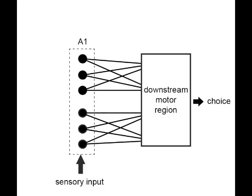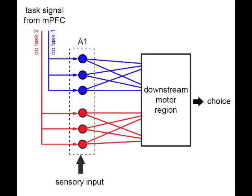All of the neurons have random tuning for the sounds, but we train the output projections of half of them to respond to noise bursts, and the other half to respond to tones. Our data suggests that similar populations of neurons exist in MPFC, and we think they might be the source of the effects we observed in A1.